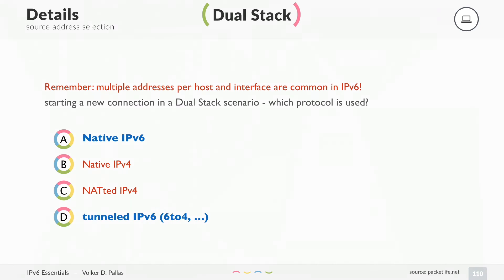Remember, you can have multiple addresses per host and interface. This is common in IPv6. So if you are dual stack, which protocol do you use, and which source address do you use?